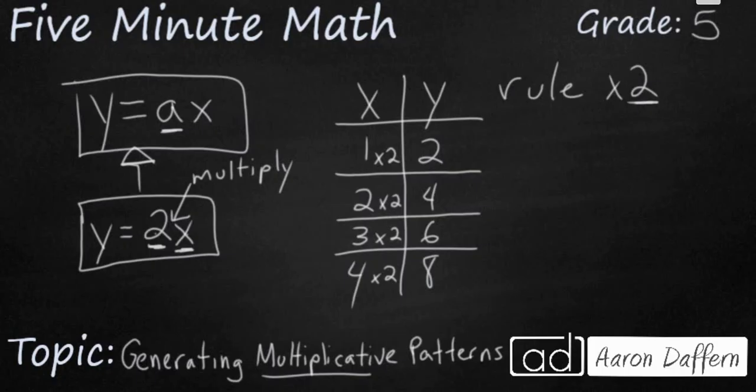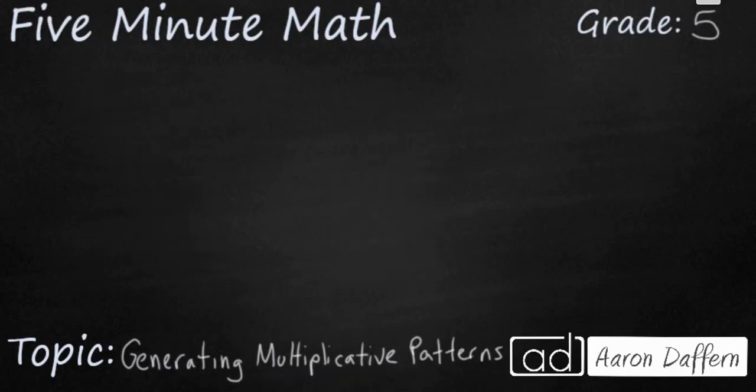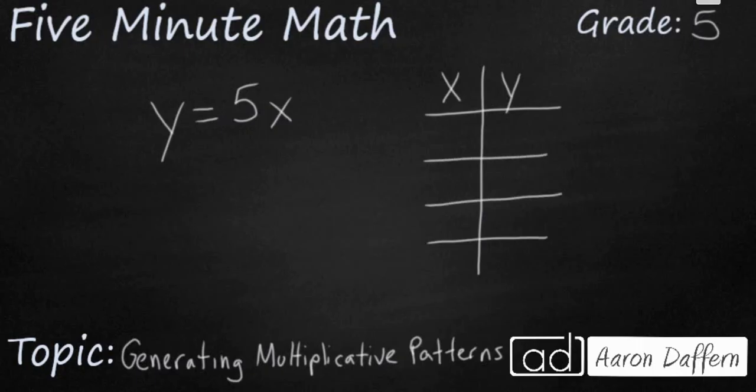Let's take a look at another example. If I wanted to take a look at this pattern here, y equals 5x. Well, I can do the same thing. This time, I'm going to change it up a little bit. I'm going to have my x values be a little bit more random. So I might try 3, 6, 7, and 12.